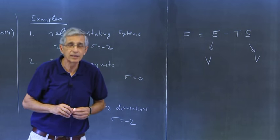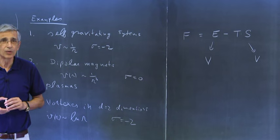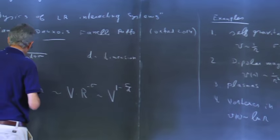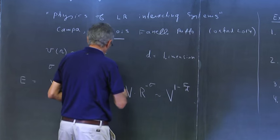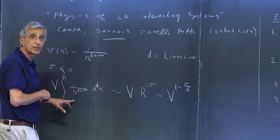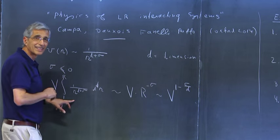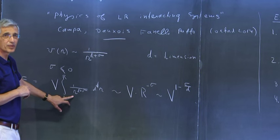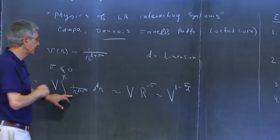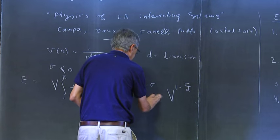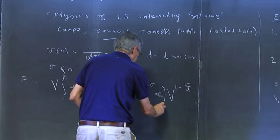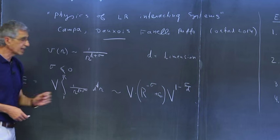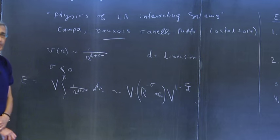When σ is positive, the integral becomes a constant — the leading term is a constant. But when σ is negative, the leading part grows with system size, so you cannot drop the constant. In systems with long-range interactions, the energy scales like V^(1 - σ/d), which is a higher power than the volume when σ is negative. The entropy, on the other hand, doesn't scale beyond the volume — the number of states is exponentially the volume, so entropy scales like volume. Therefore the energy is much larger than the entropy in such systems.